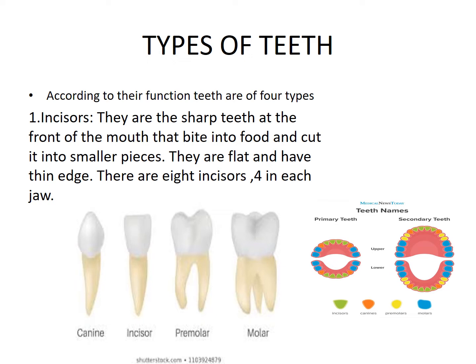Now coming to the types of teeth according to their function — teeth are of four types. These are the incisors. If you see this picture here, the green color teeth are the incisors, the orange one is the canine, and the blue one is the molar. In primary teeth there are no premolars.